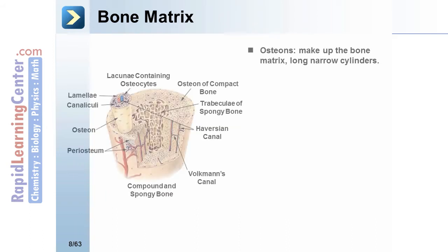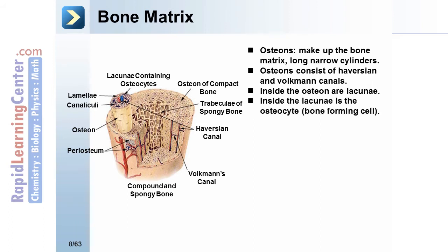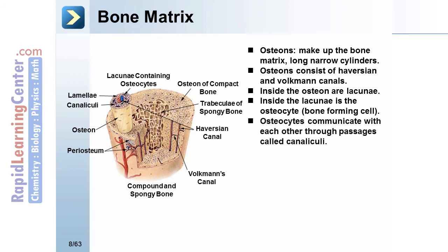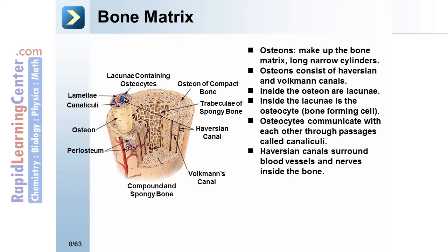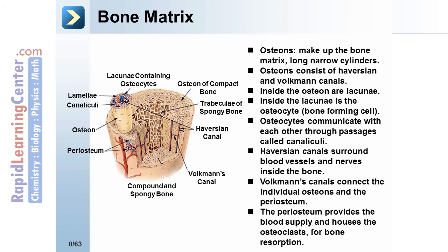Osteons make up the bone matrix as long narrow cylinders. Osteons consist of the Haversian and Volkmann canals. Inside the osteon are lacunae; inside the lacunae is the osteocyte, the bone-forming cell. Osteocytes communicate with each other through passages called canaliculi. Haversian canals surround blood vessels and nerves inside the bone. Volkmann's canals connect the individual osteons and the periosteum, which provides the blood supply and houses the osteoclasts for bone resorption.